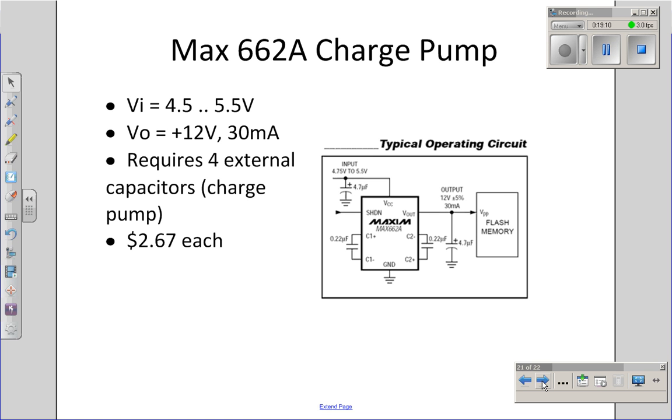The disadvantage of a charge pump is you need 4 external components, the capacitors for your charge pump, and the cost. They're $2.67 each. So with that, we have several different ways to convert voltage from one level to another. I can drop the voltage with a voltage divider and a buffer. I can do it more efficiently with a buck converter. I can raise the voltage with a boost converter. I can also raise the voltage with a charge pump.